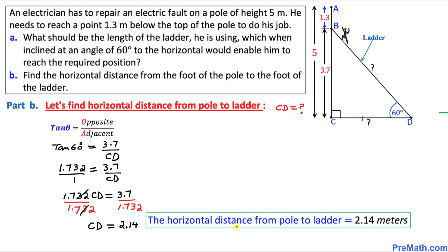That's the horizontal distance from pole to the ladder, which is CD, turns out to be 2.14 meters.